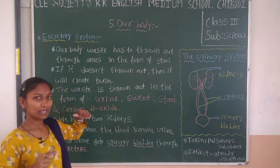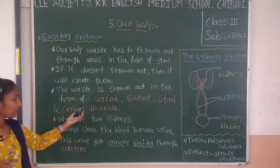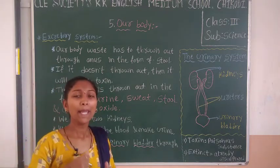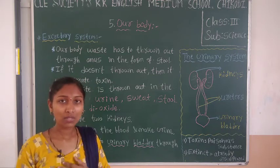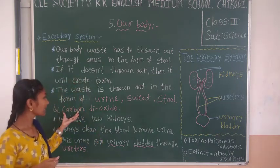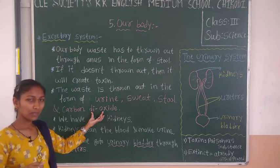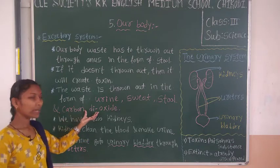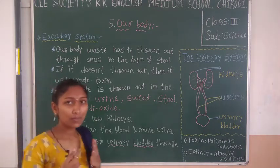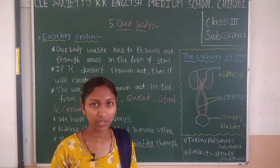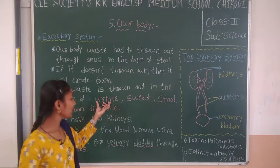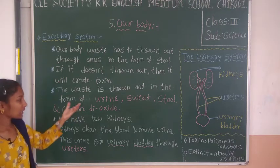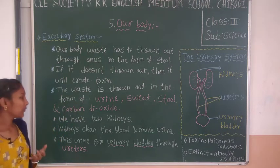How does sweating happen? Sweating comes out through the skin. How does urine pass out? And when we breathe out, our lungs release carbon dioxide — that is the form of waste product created in our body. So these are the forms of body waste: sweating, stool, carbon dioxide from breathing, and urine.